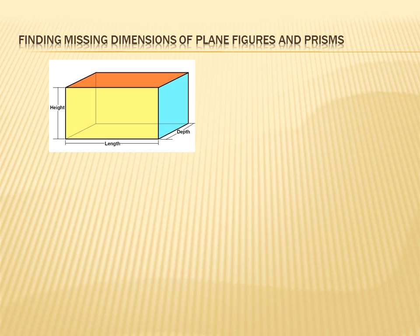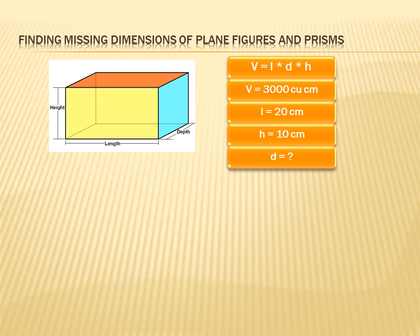Here's a slightly trickier example. This time we've got a prism. It's a three-dimensional figure. How are we going to figure that out? Well, we're going to need to know the formula for the volume of a cube or a prism. And that's the length times the depth times the height. Now, they're going to give us some information. In this case, they're going to tell us that the volume equals 3,000, the length equals 20, the height equals 10, and they're going to ask us to figure out what the depth is.